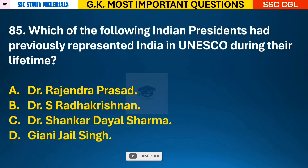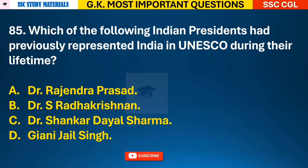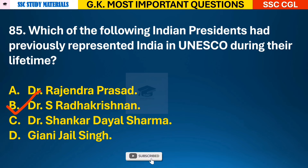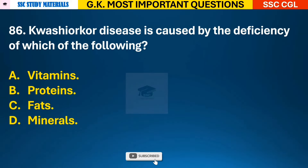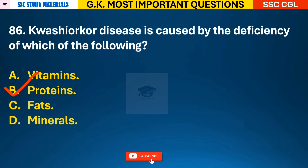Question 85: Which of the following Indian presidents had previously represented India in UNESCO during their lifetime? Answer B - Dr. S. Radhakrishnan. Question 86: Kwashiorkor disease is caused by the deficiency of which of the following? Answer B - it is due to the deficiency of proteins.